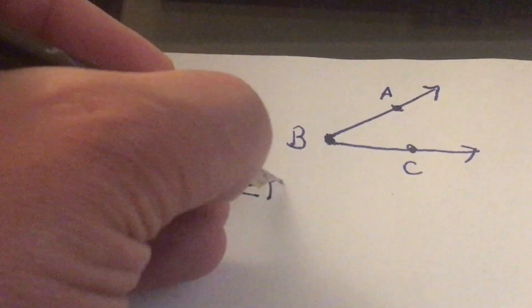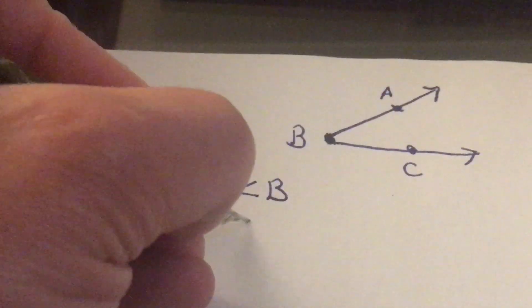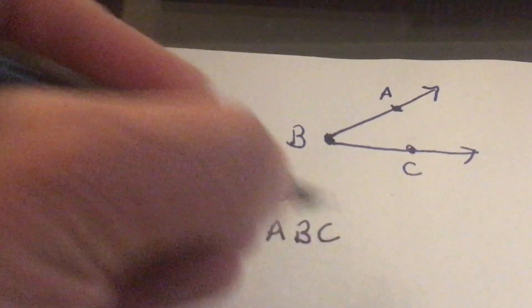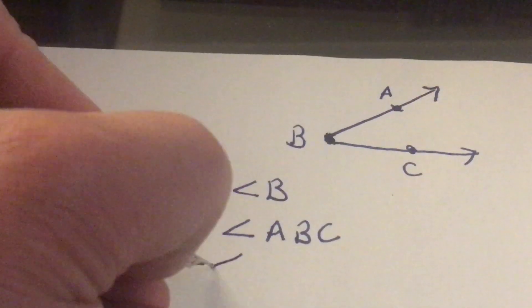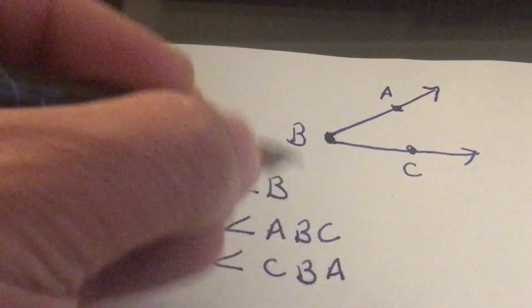But if there's more than one angle here, or to differentiate, we can also use the sides. So we can go A B C, so that we have our A, B, and C. You can also reverse it and go C B A.